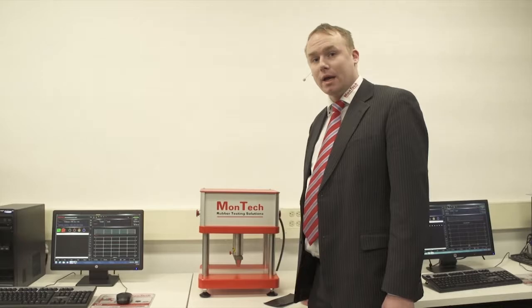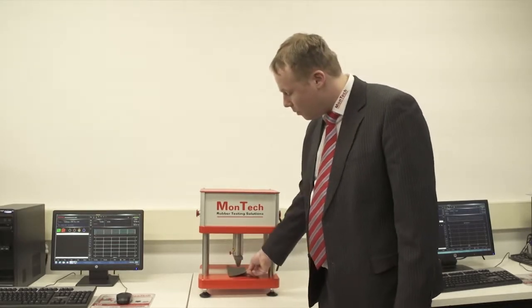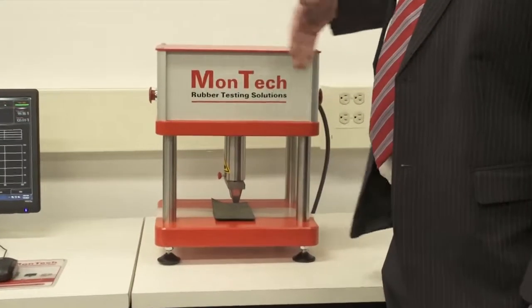Preparing samples is really easy. You just take a sheet of molded cured rubber, position it underneath the knife, and hit both buttons simultaneously.